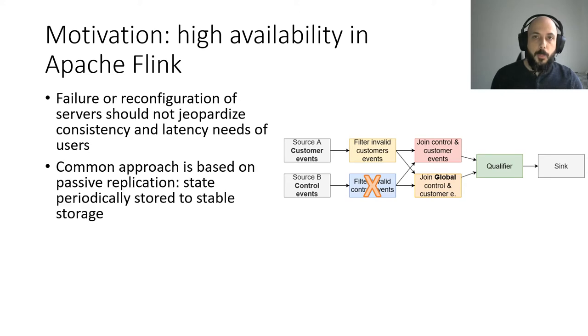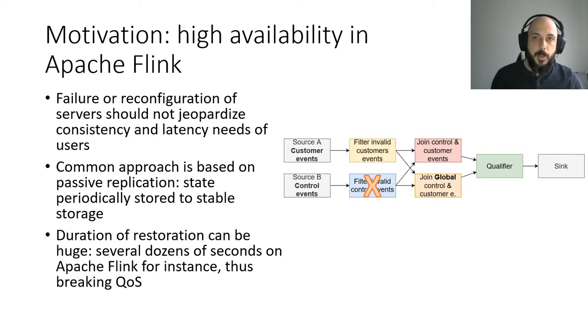The common approach for high availability is based on passive replication. The state is periodically stored in checkpoints to stable storage and the job is recreated based on this used storage. However, some data can still be lost and the duration of restoration can be huge. For instance, it can last dozens of seconds on Apache Flink thus breaking the expected quality of service.